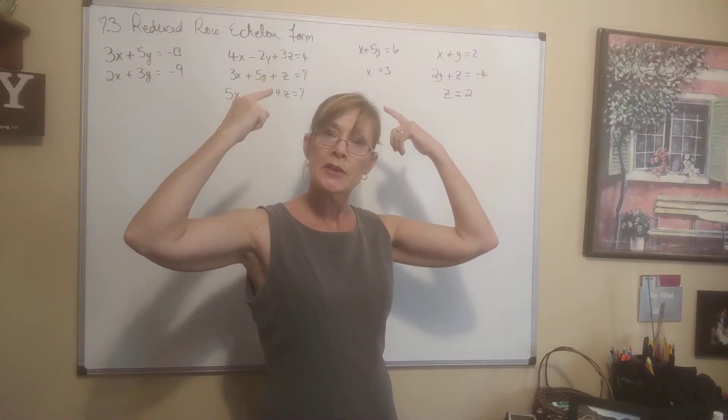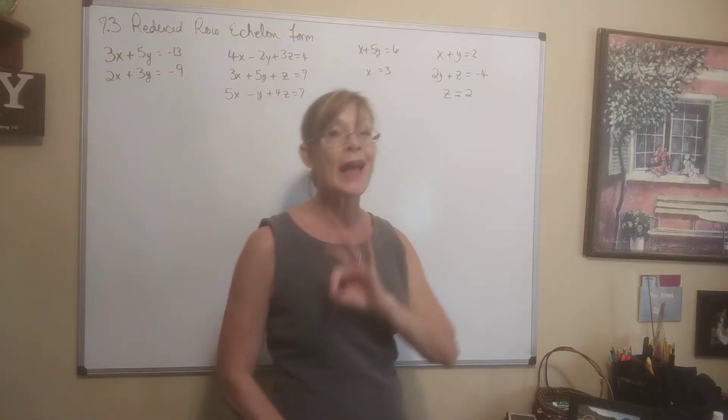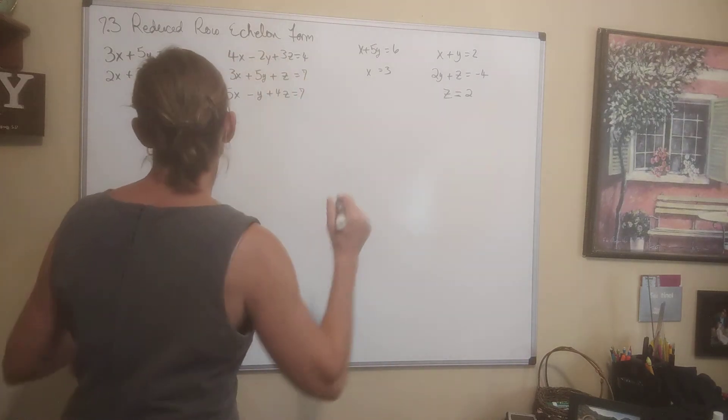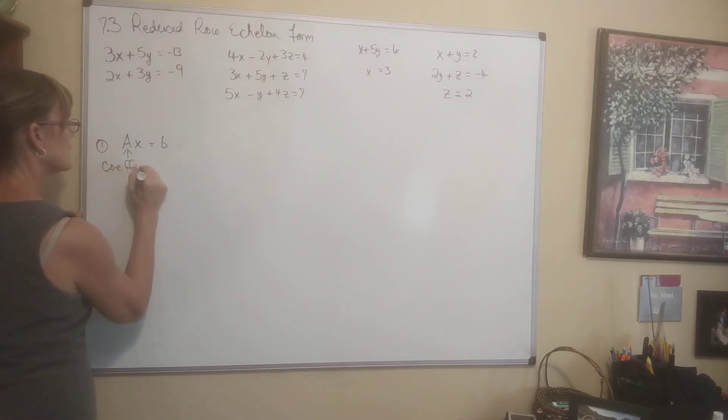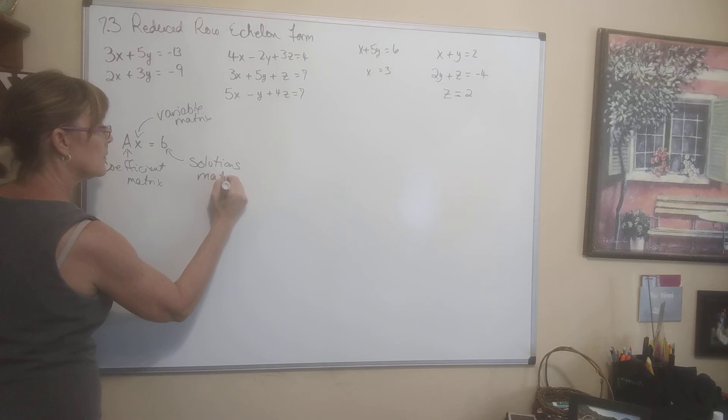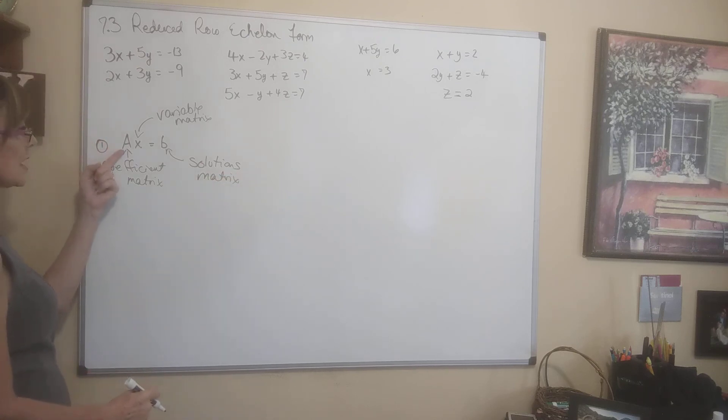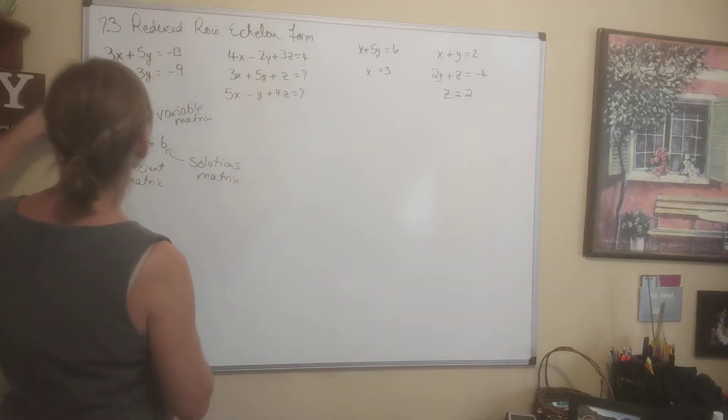So first, I have copied down the matrices that you have on your worksheet on my board. Number one says write the matrix equation AX equals B. I will ask you to do that many times, and you're going to have to know how to do this. It's really straightforward. Let me tell you what A is. A is a matrix, and it's called the coefficient matrix. X is a matrix, and it is the variable matrix. And B is referred to as the solutions matrix. We just talked about how to multiply matrices together.